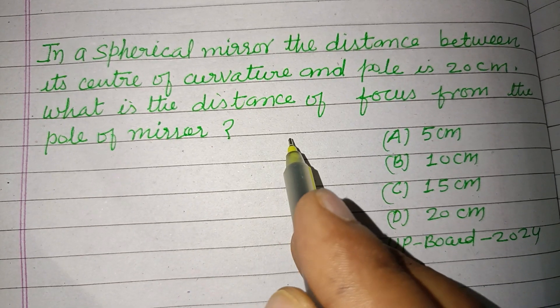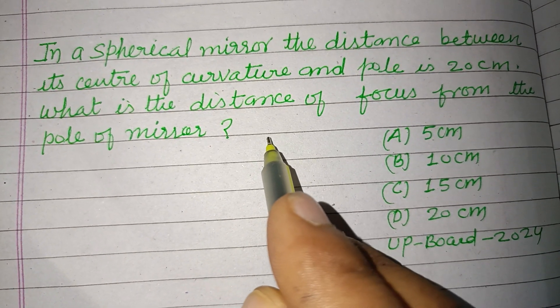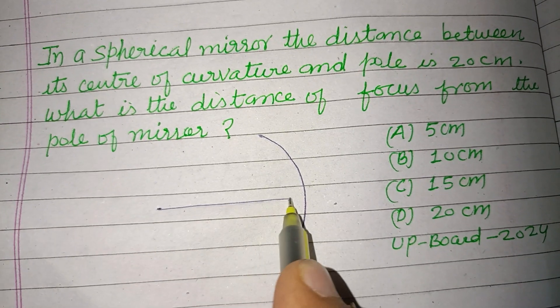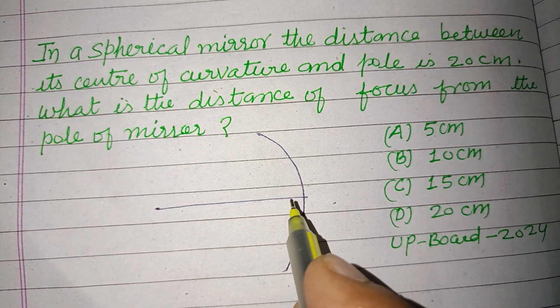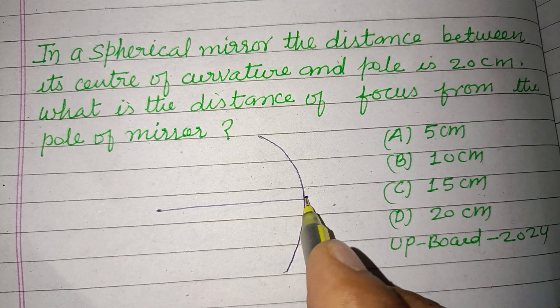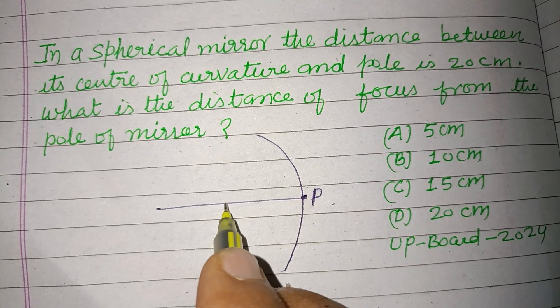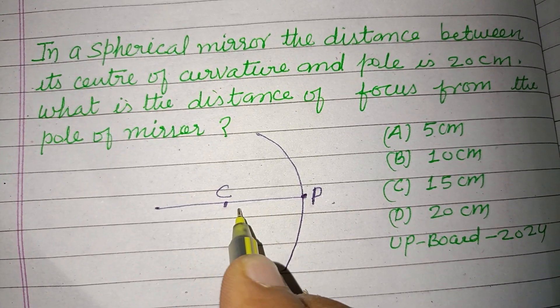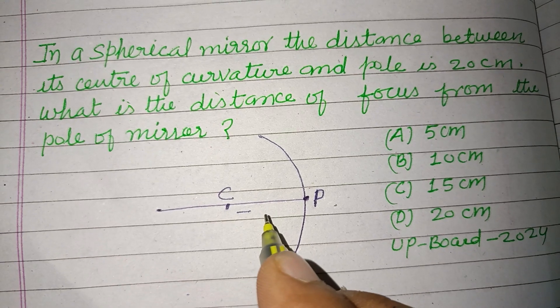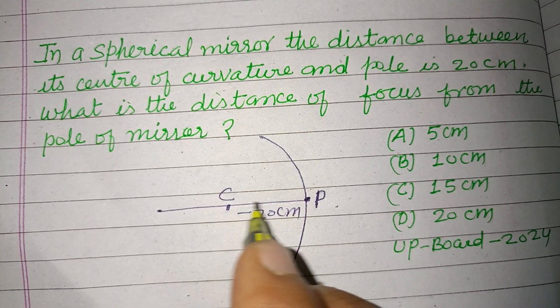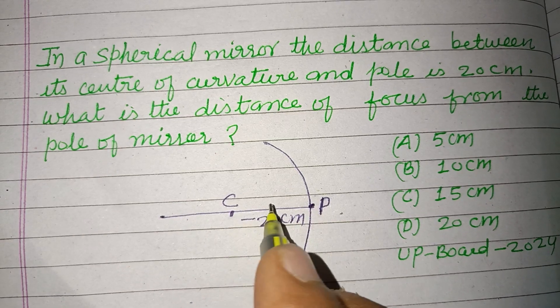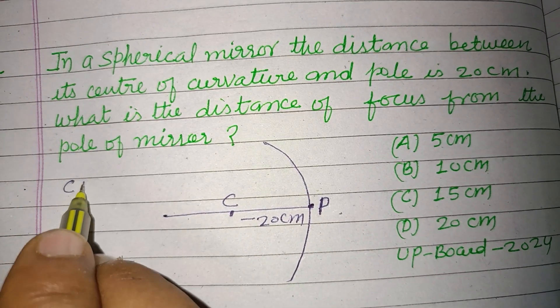So students, here we have a mirror. The distance from the center of curvature to the pole - this center of curvature - is given to us as 20 centimeters. The distance between C (center of curvature) and P (pole) is called the radius of curvature.